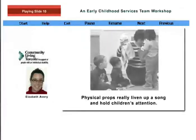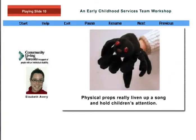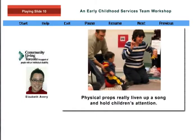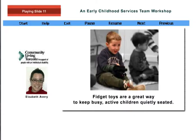Physical props such as finger and hand puppets really liven up a song and hold children's attention — they can help explain a song. An example is a hand puppet of a big spider: while singing Incy Wincy Spider, the hand puppet can demonstrate the song by climbing up someone's arm. When singing the bubble song, wave a wand with bubble solution as you sing. A toy bus will help when singing Wheels on the Bus. If children need to get up and participate more physically, consider lining chairs behind each other as you sing Wheels on the Bus. Fidget toys are a great way to keep busy, active children quietly seated — these toys should be small and make no noise.